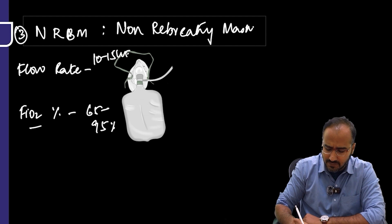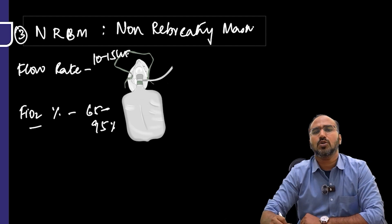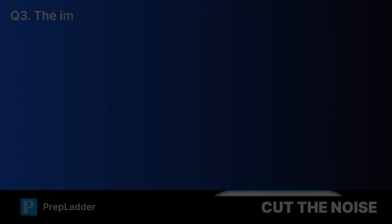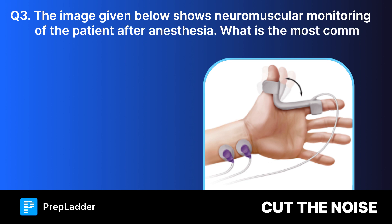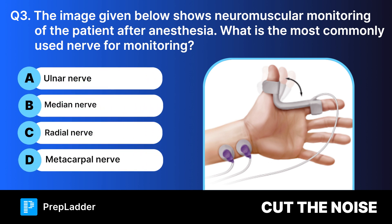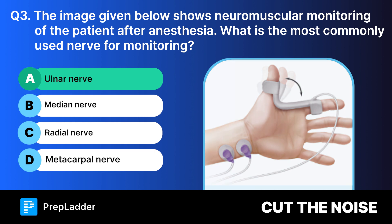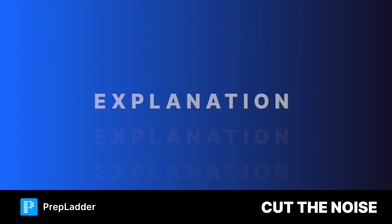Question number three: the image below shows neuromuscular monitoring of the patient after anesthesia. What is the most commonly used nerve for monitoring? The correct answer is the ulnar nerve.